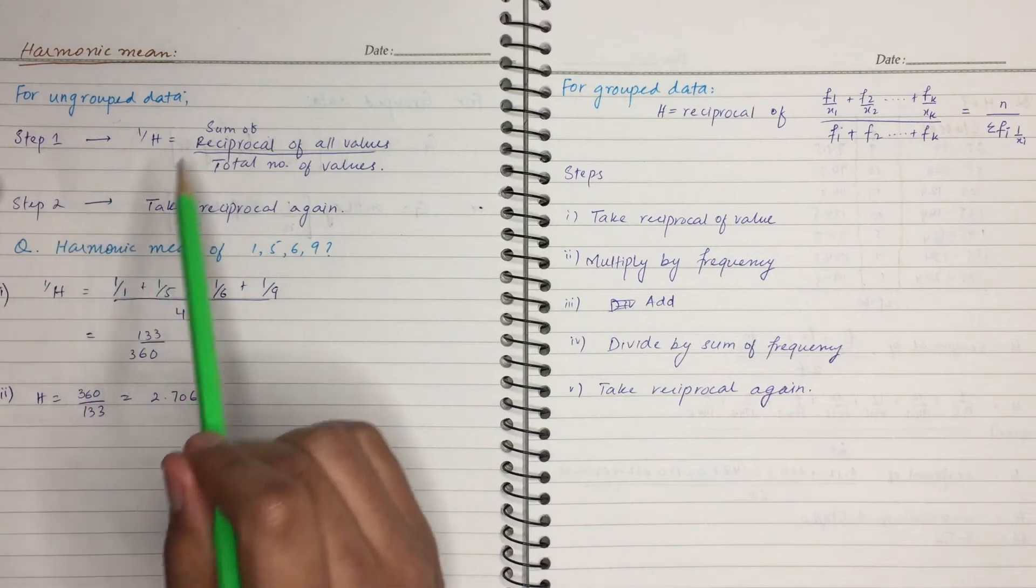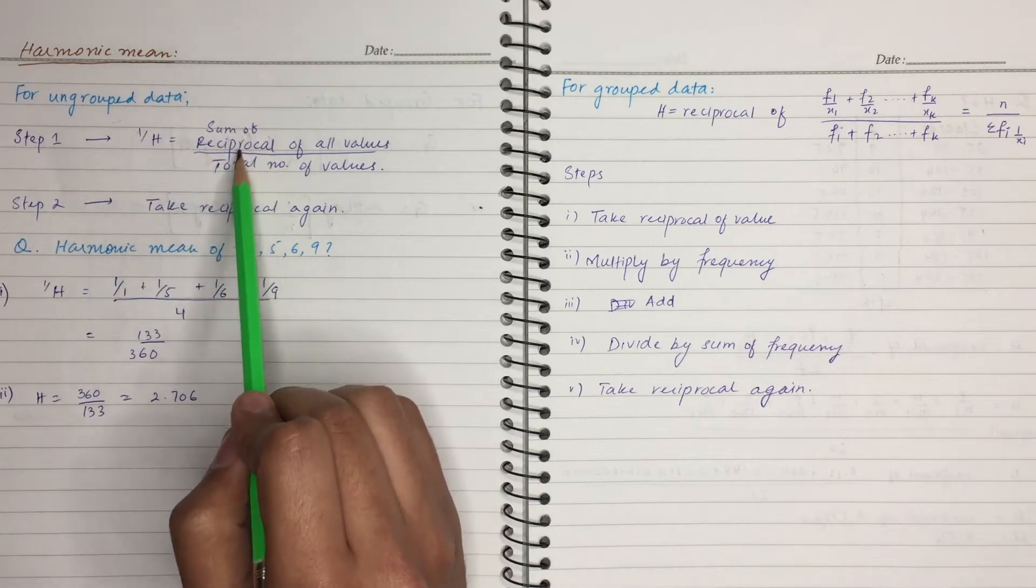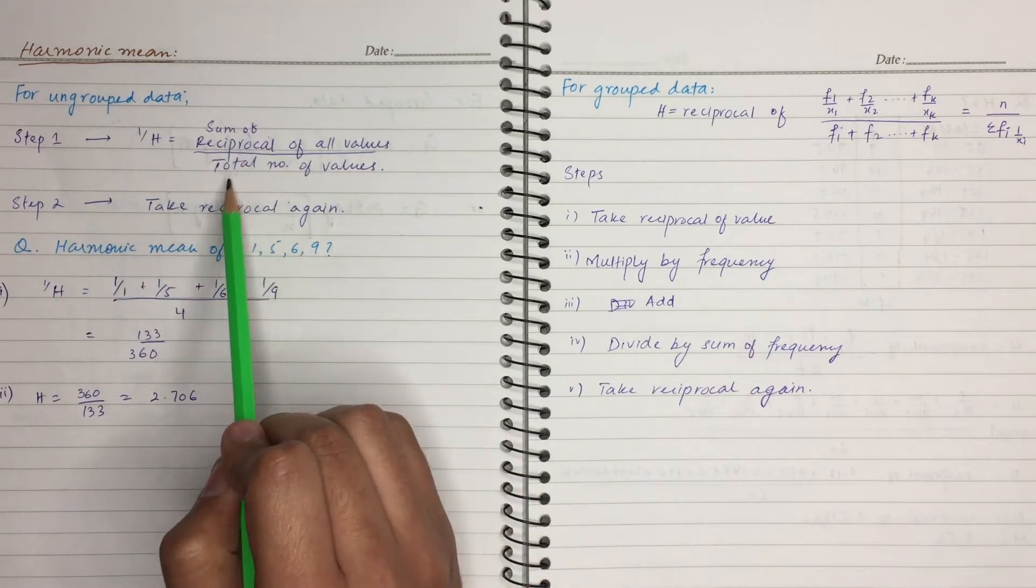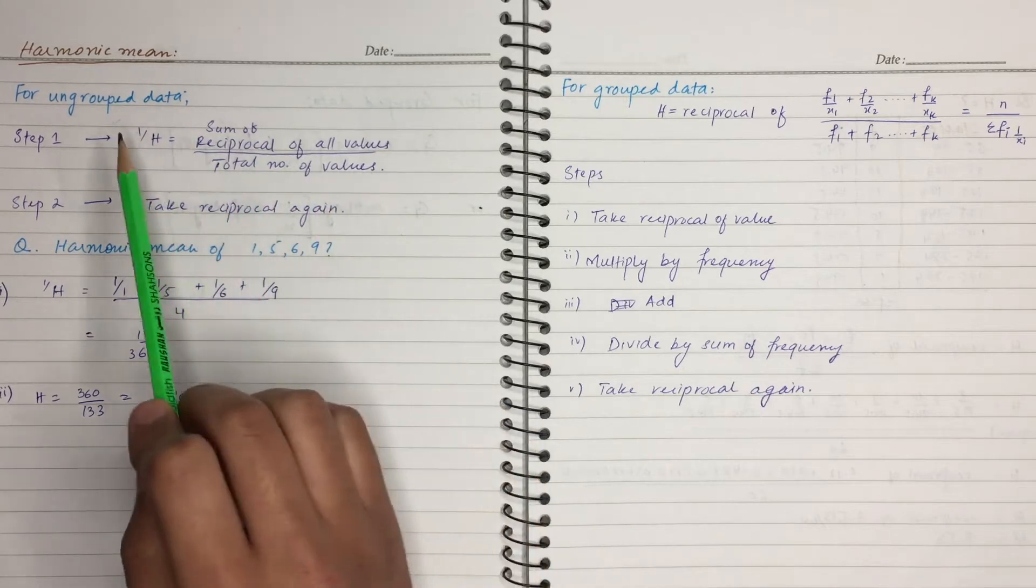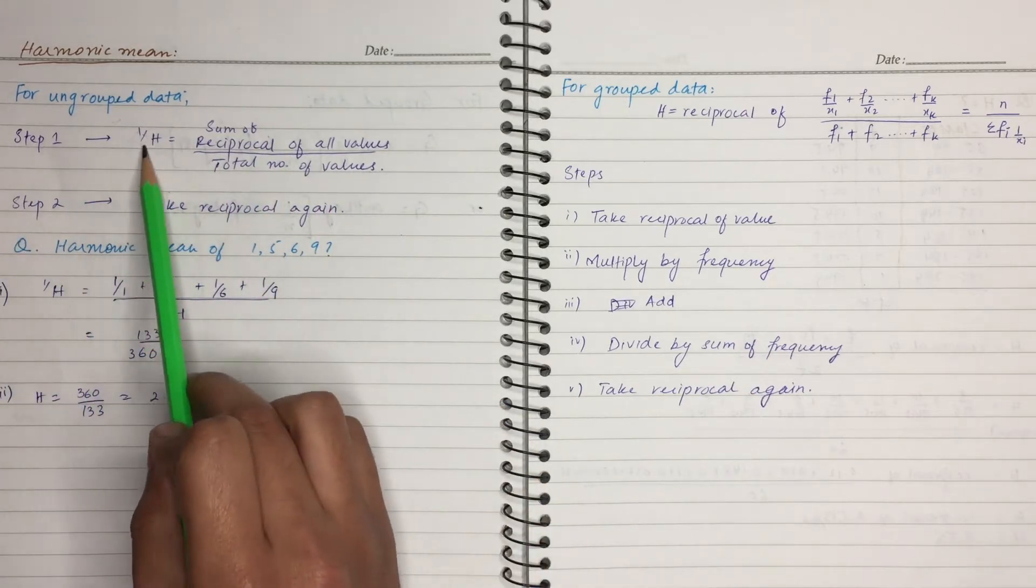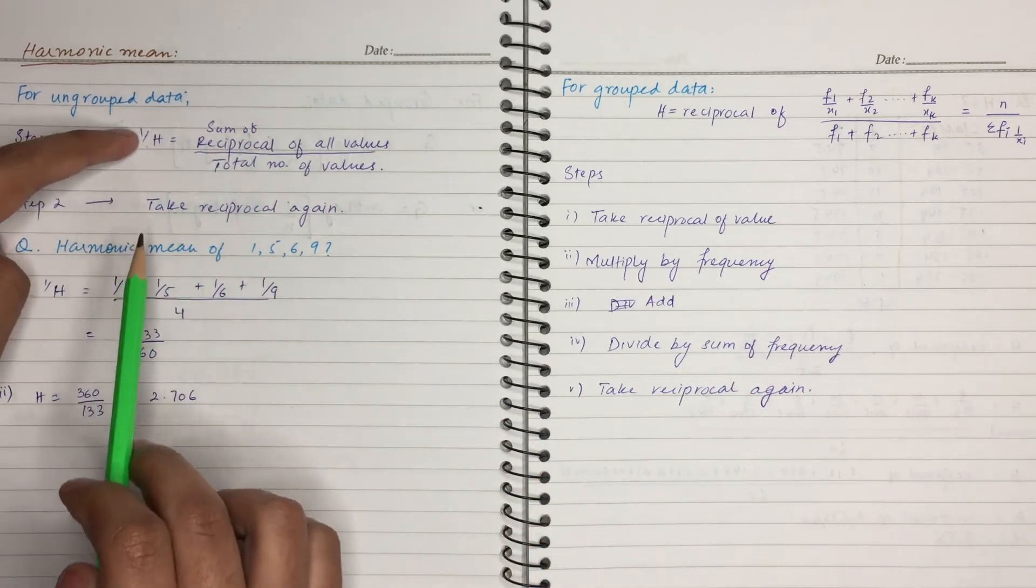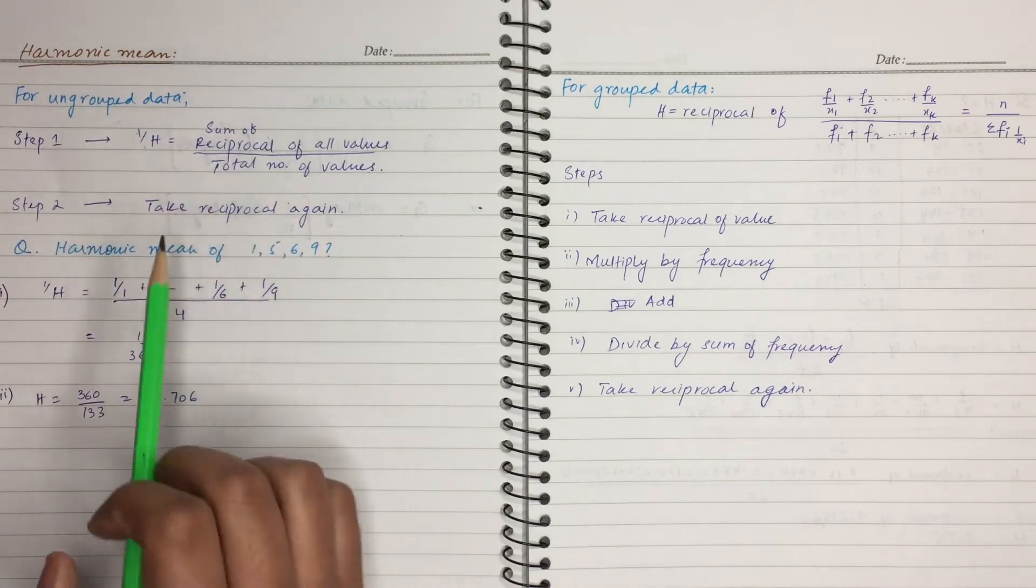Step 1 is the sum of reciprocal of all values divided by total number of values. This will give us 1 over H. Then we simply take the reciprocal of harmonic mean. Then we will come to harmonic mean.